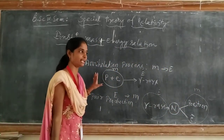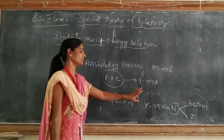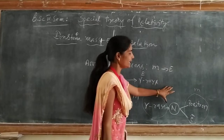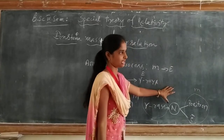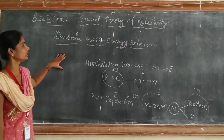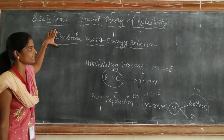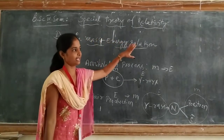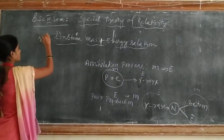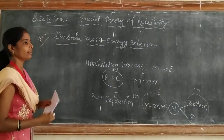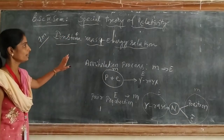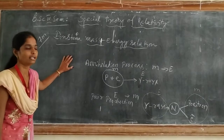Therefore, Einstein said that energy and mass are dependent on each other — they are related with each other. Now, how do we derive this very important derivation called the Einstein mass-energy relation? This is a seven-mark question. Let us discuss how to derive the Einstein energy relation.